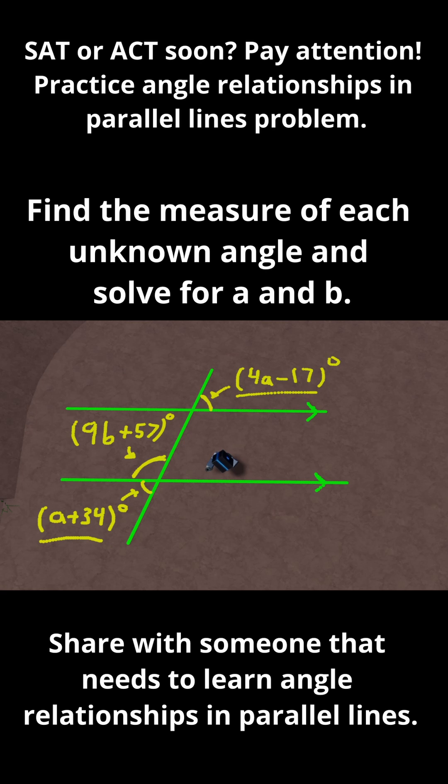So I can set up an equation where 4a minus 17 has to be equal to a plus 34, and I can solve this equation for a. To solve this, let's add 17 to both sides first. If you do that, 34 plus 17 is 51. So 4a equals a plus 51.